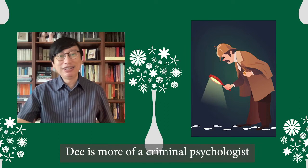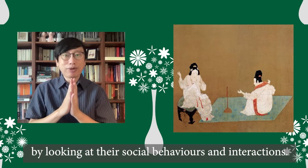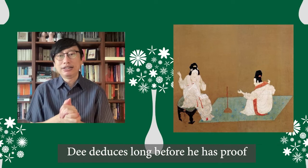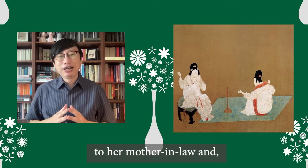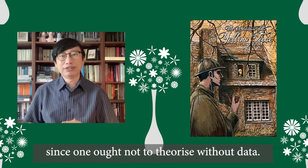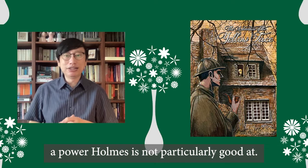Dee is more of a criminal psychologist and makes character assessments with an aim to fathom the extent of culpability. He assesses his characters by looking at their social behaviours and interactions. In the so-called case of the strange corpse, Dee deduces long before he has proved it that Mrs. Cho killed her husband, in view of her rudeness to her mother-in-law and on the basis of that, her mother-in-law's simple-mindedness. For Holmes, Dee's way of discerning is defective since one ought not to theorize without data. But Dee works by intuition, a power Holmes is not particularly good at.